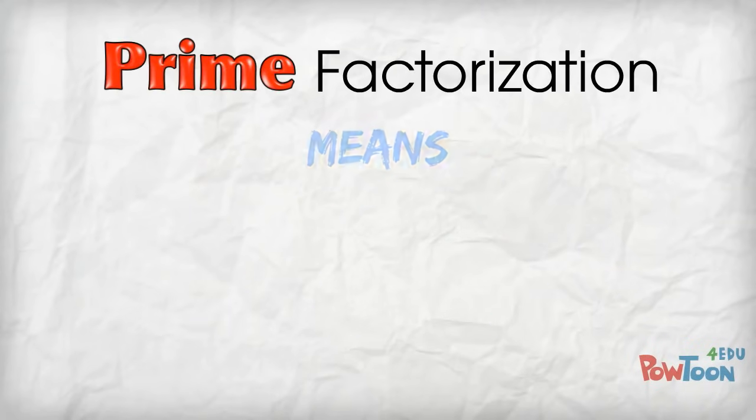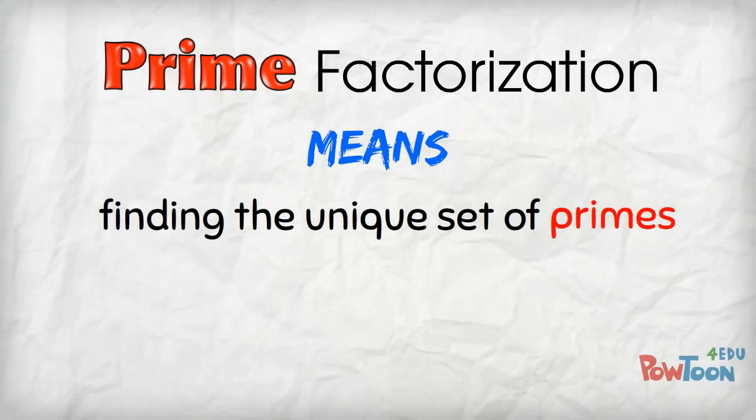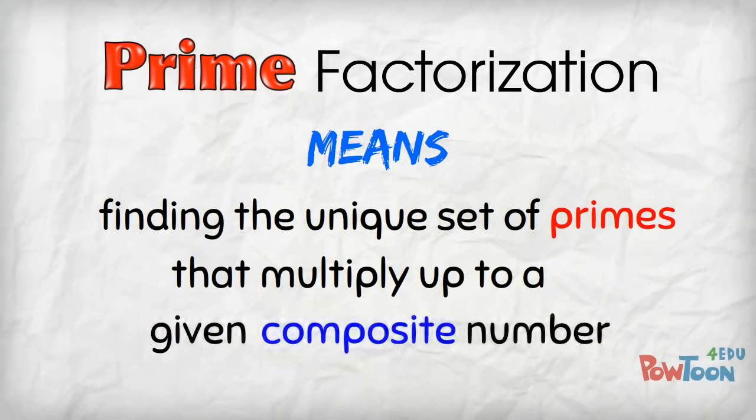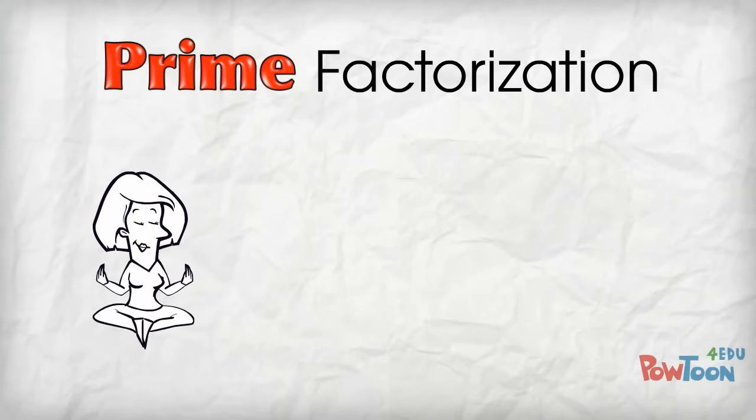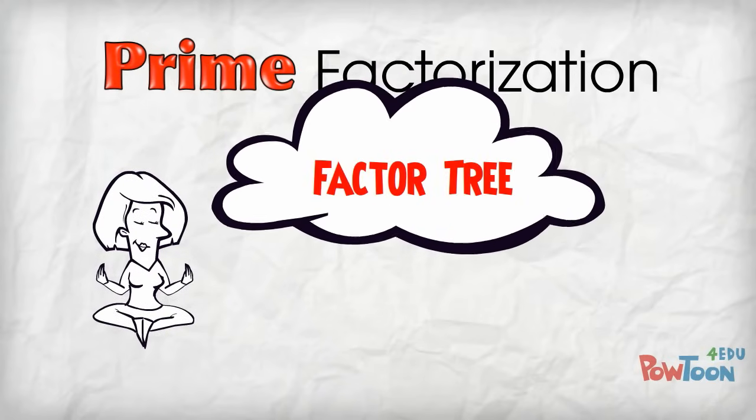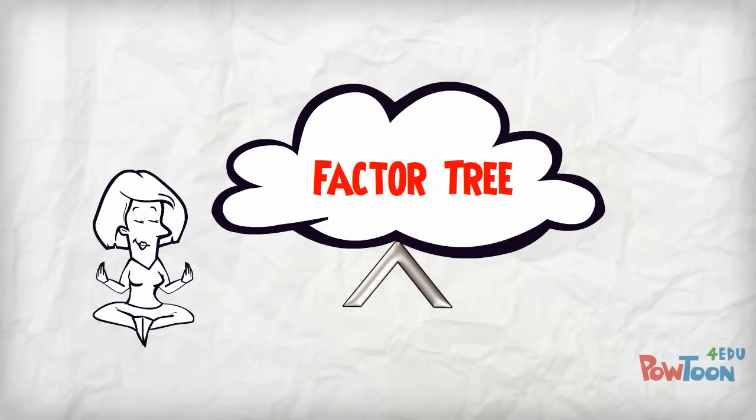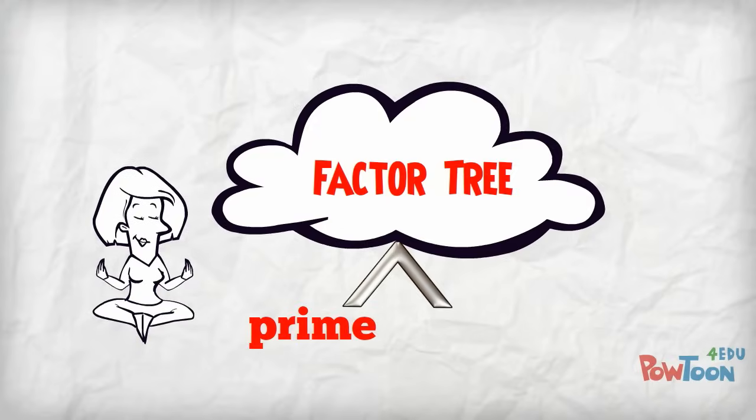Prime factorization means finding that single set of prime numbers that multiply up to a given composite number. To do a prime factorization, we can use a factor tree to help us split each composite number apart into its prime factors.